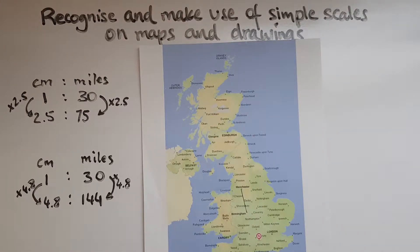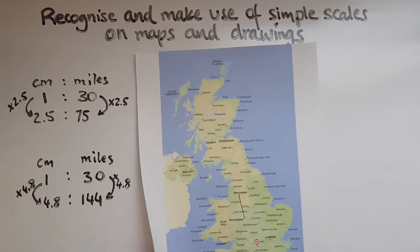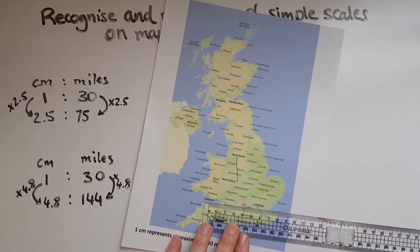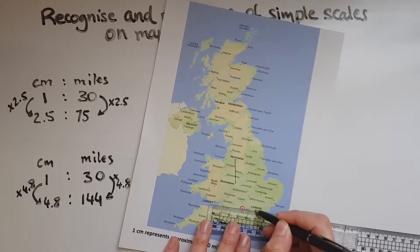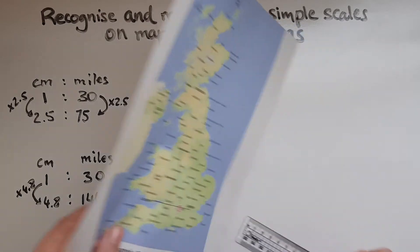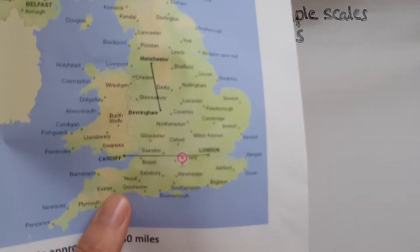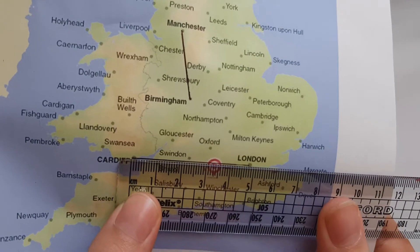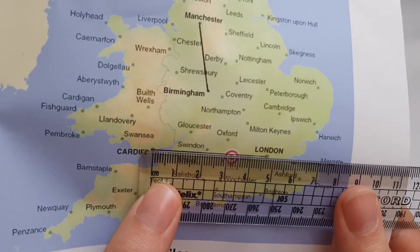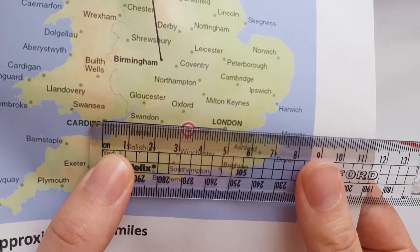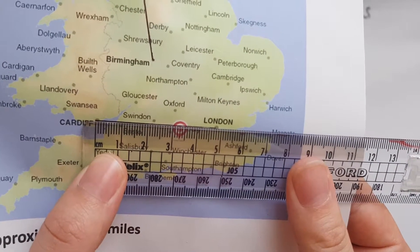So we've found that the distance on the map should be 4.8 centimetres. Let's verify: we draw a straight line between London and Cardiff and measure it — and that is indeed approximately 4.8 centimetres.